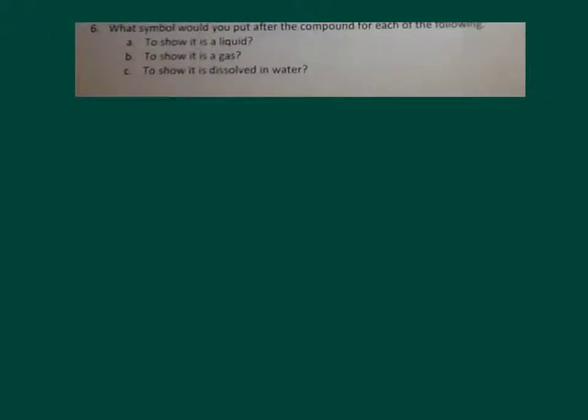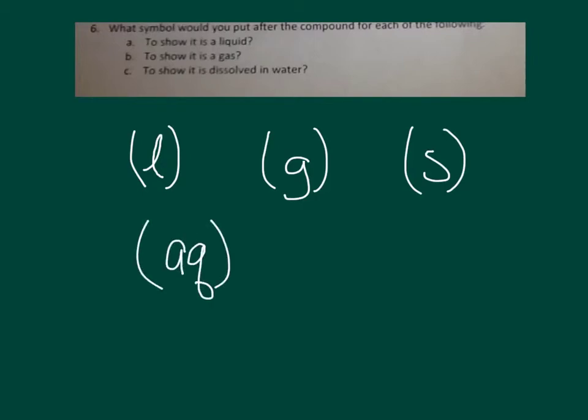And for number six, the symbols that go after these, these were on our Writing Equations YouTube video. For letter A, for a liquid, it's going to be L. For a gas, it's going to be G. The other quiz, you had a solid. That's going to be S. And to show it's dissolved in water is AQ, that it's in an aqueous solution. And hope these help you out.